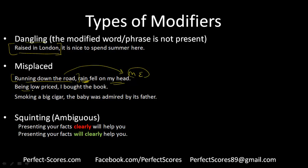'Being low priced, I bought the book' — this modifier should be placed next to the book, not I. 'Smoking a big cigar, the baby was admired by its father' — smoking a big cigar is modifying the father, not the baby, so this sentence is also wrong.